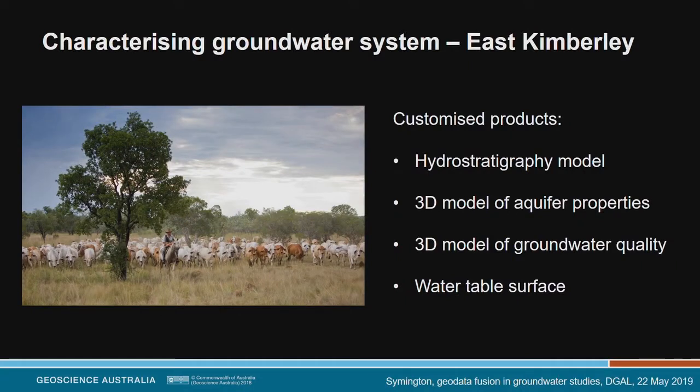These are the four products I'll be focusing on. We produce a lot of different products, but for brevity I'm going to focus on these four because they are the most important and most of all they deal with the subsurface, which is one of the great challenges with characterising groundwater. These products are: hydrostratigraphy — mappable units based on hydraulic properties such as whether a unit behaves as an aquifer or an aquitard; aquifer properties; 3D groundwater quality — where we have fresh versus saline water; and finally the water table surface — at any point, how deep is it to the water table.